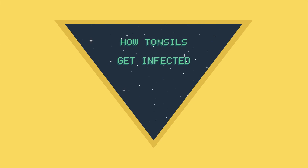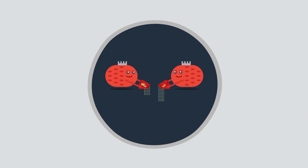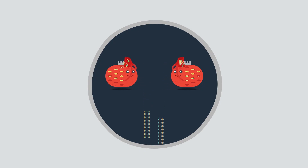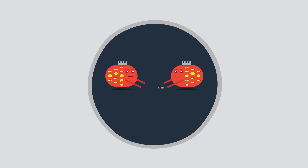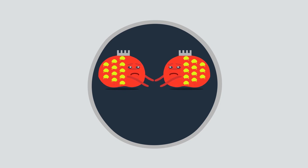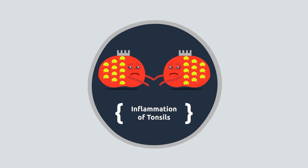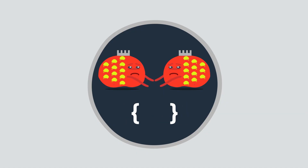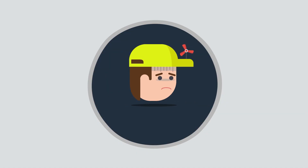How Tonsils Get Infected. Tonsils can also become clogged with bacteria and food particles, which can lead to problems. When this happens, the tonsil itself becomes infected and starts to get swollen due to inflammation, leading to a condition known as tonsillitis, or inflammation of the tonsils. Because the tonsils are always trapping bacteria, they can become infected quite commonly, especially in children, leading to a condition known as recurrent acute tonsillitis.